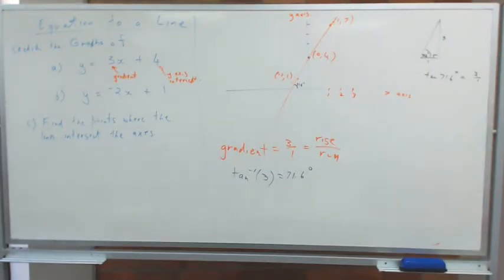So if you plug in tan 71.6 degrees, obviously it's going to give you an answer of 3. In other words, 3 to 1.